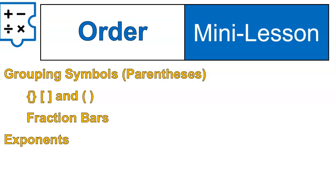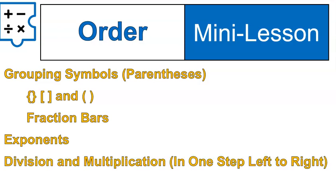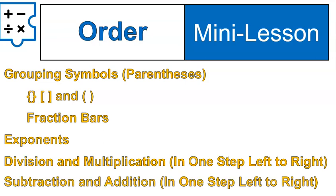Then we do exponents — we'll talk about what that means later, but that's something that gets simplified next. After that, we do division and multiplication in one step from left to right, and then subtraction and addition in one step from left to right. Those are the order.